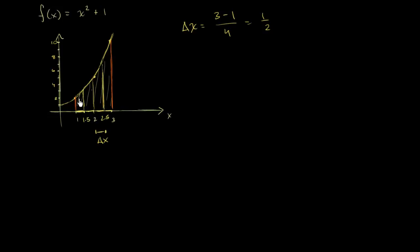Now let's think about how we'll define the height of the rectangles. For the sake of this video — we'll see in future videos that there are other ways of doing this — I'm going to use the function evaluated at the left boundary to define the height. So for example, for the first rectangle, this point right over here is f of 1, and that is the height of our first rectangle.